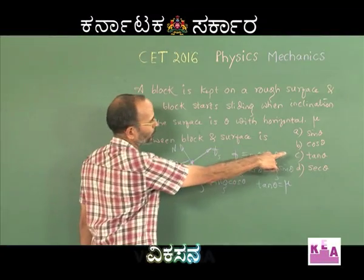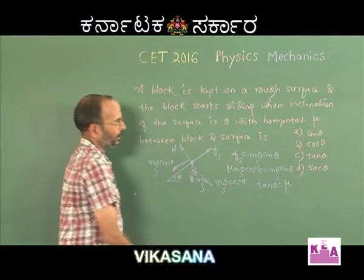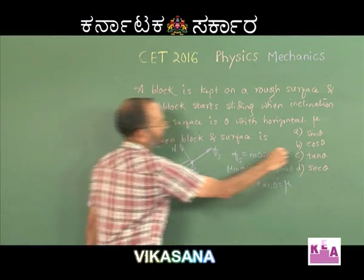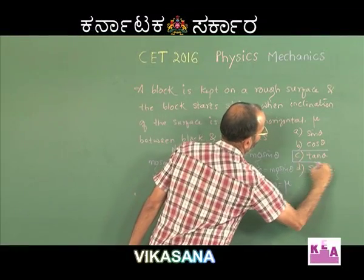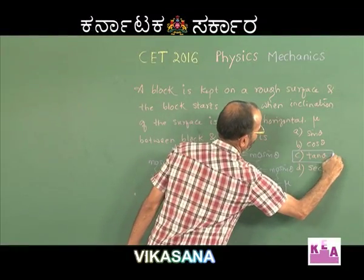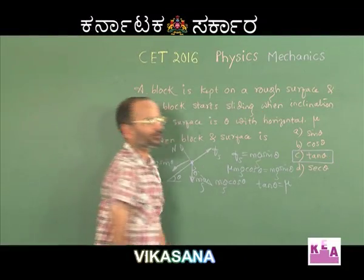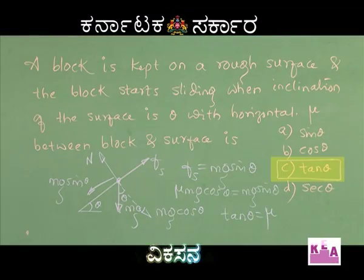So C is the correct option — the coefficient of friction between the block and the surface is tan theta.